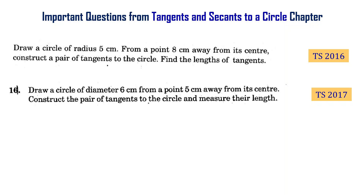Draw a circle of radius 5 cm. From a point 0.8 cm away from its center, construct a pair of tangents to the circle. Find the length of the tangents.